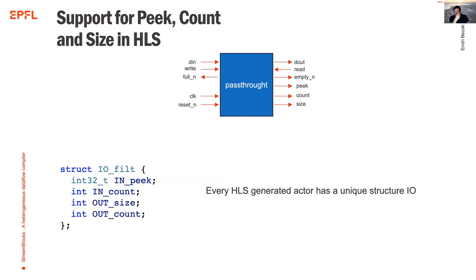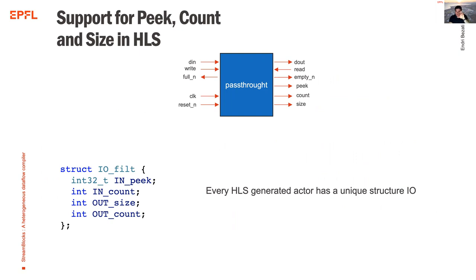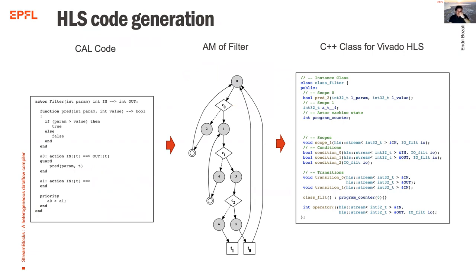For every actor, depending on its inputs and outputs, we create an IO structure containing peak, count, and size. For the HLS code structure, we start from CAL, get an actor machine, and generate a C++ class for the actor. This class defines state variables, scope functions that memorize peak values, conditions as member functions, transitions, a constructor initializing state variables, and the controller implemented as an overloaded function operator.